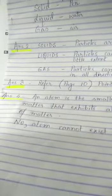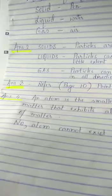Now, the second part of the question is, does it exist independently? So, the answer to it is no. An atom cannot exist independently. So, this way I complete the first chapter.